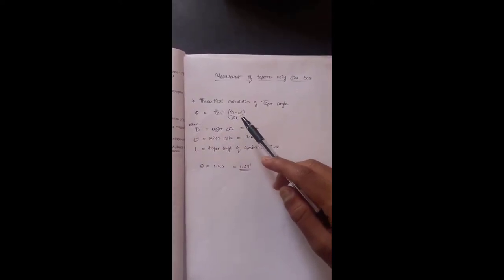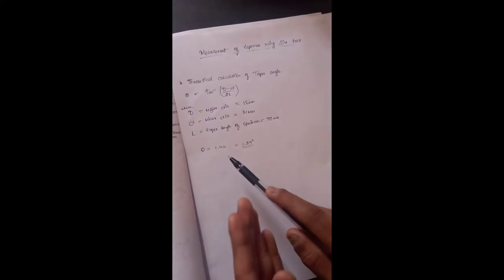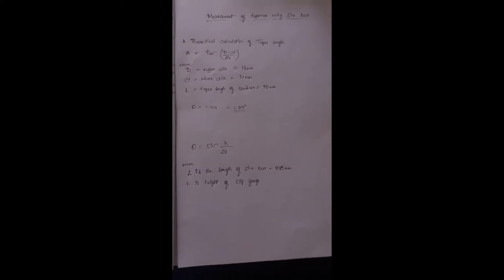By substituting all these in theta equals tan inverse of (D minus d) by 2L, which is the theoretical taper angle, we have found out theta as 1.44 radians, which is also equal to 1.29 degrees.